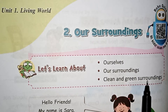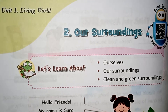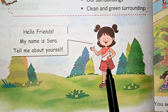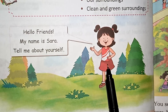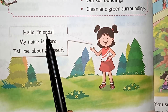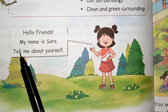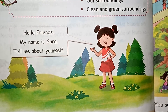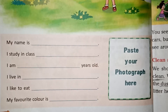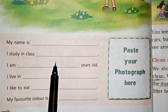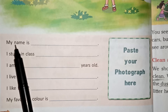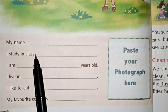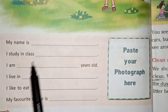Our surroundings. Clean and green surroundings. Look, here is a picture and this girl is introducing herself. Hello friends, my name is Sara. Tell me about yourself — here you will give your introduction. My name is... what is your name? You will write here. I study in Class 1.